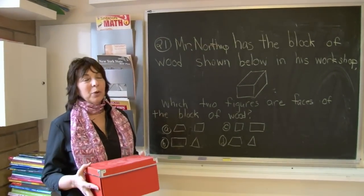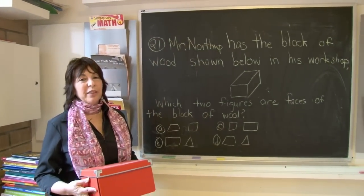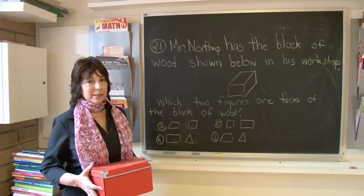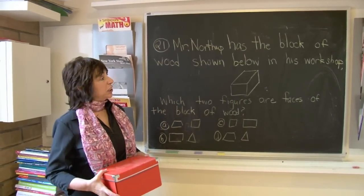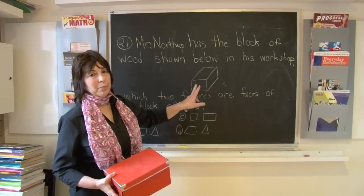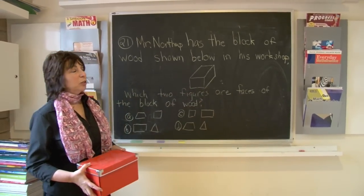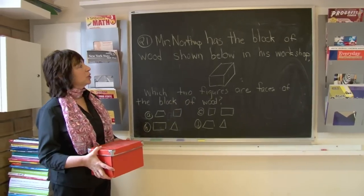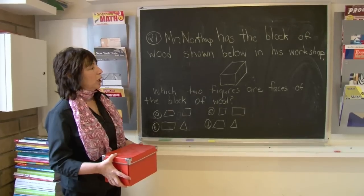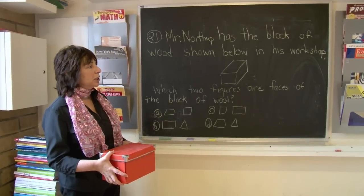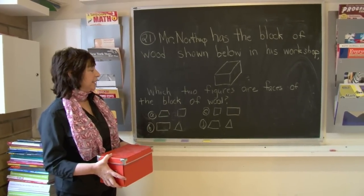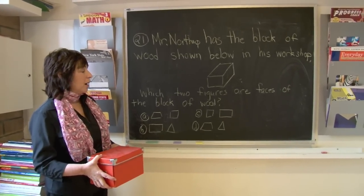Boys and girls, the next question deals with geometric shapes, or three-dimensional shapes. The shape shown below is a rectangular prism. Let's look at the question. Mr. Northup has the block of wood shown below in his workshop. Which two figures are faces of the block of wood?